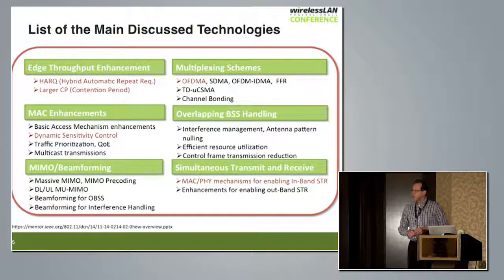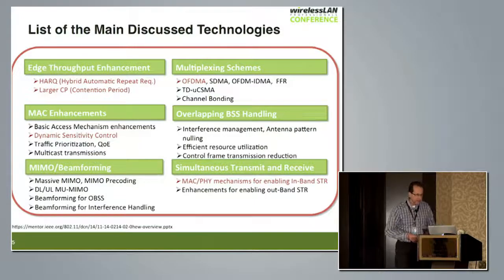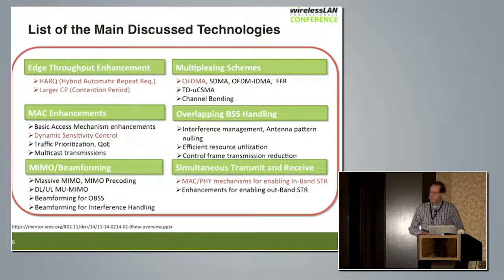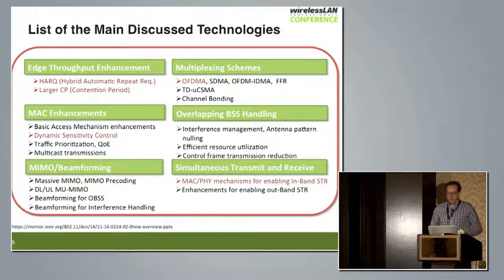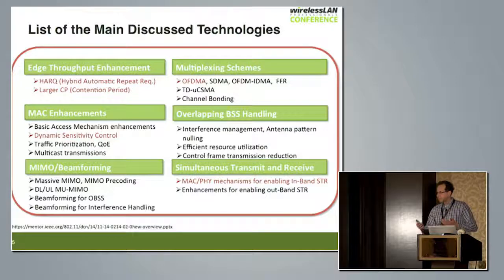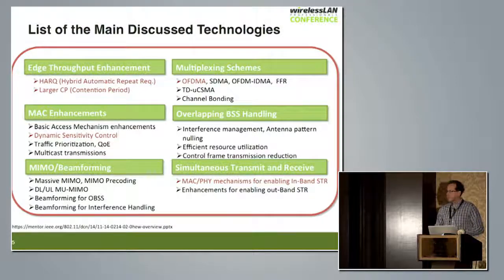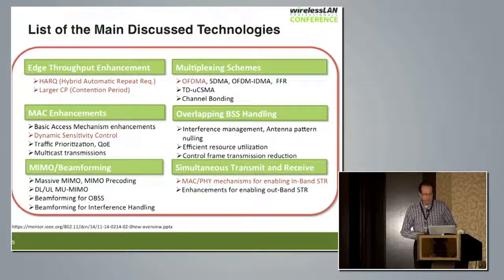The standardization body has defined a number of possible areas that can be improved. Here is a list of those key technologies. I will cover a few: HARQ, larger CP, OFDMA — which seems to be picking up a lot of interest recently — dynamic sensitivity control, and full duplex, meaning simultaneous transmit and receive functions.